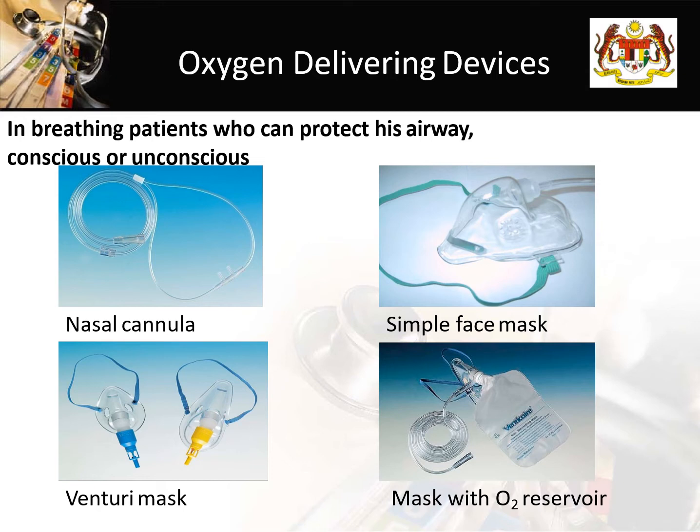I'll start with the nasal cannula. This is commonly used to deliver one to six liters per minute of oxygen. Usually we put around three liters per minute, as too high a flow of oxygen delivery through the nasal cannula can cause irritation and dryness to the nasal mucosa, causing discomfort.